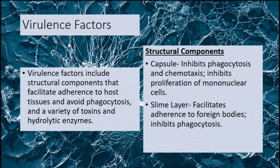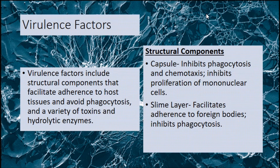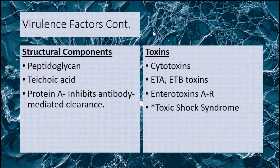Moving on, we're going to talk about the virulence factors. Virulence factors include structural components that facilitate adherence to host tissues and avoid phagocytosis, and a variety of toxins and hydrolytic enzymes. Starting with the structural components of Staph aureus: it has a capsule which inhibits phagocytosis and chemotaxis, and also helps inhibit proliferation of mononuclear cells. The slime layer facilitates adherence to foreign bodies and inhibits phagocytosis as well.